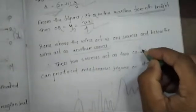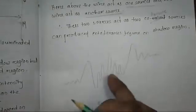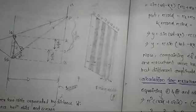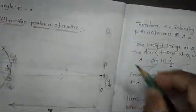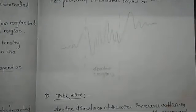These two sources act as coherent sources and can produce interference, as represented in the figure. In the shadow region, we get an interference pattern similar to that observed in Young's double slit experiment. Above P and below M, in the illumination area, we get a decreasing intensity of the diffraction pattern.